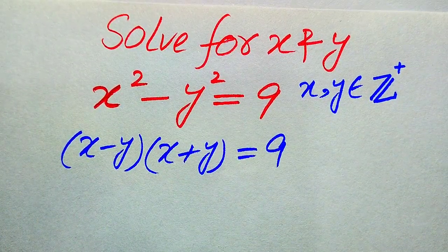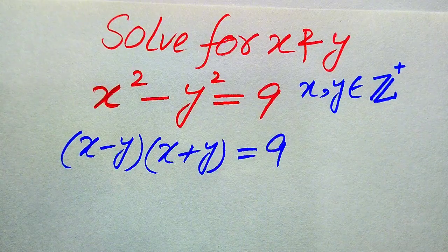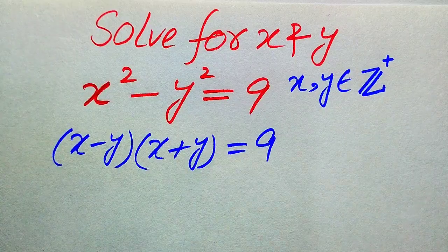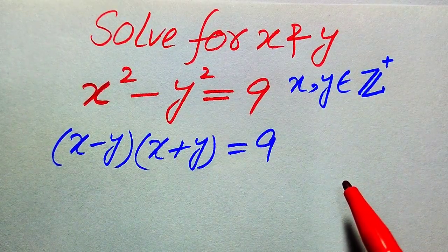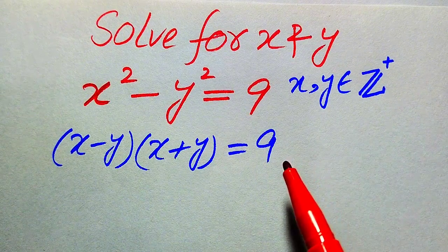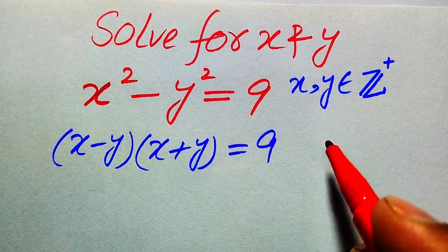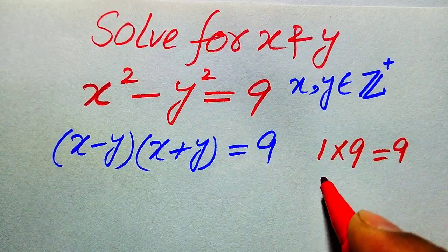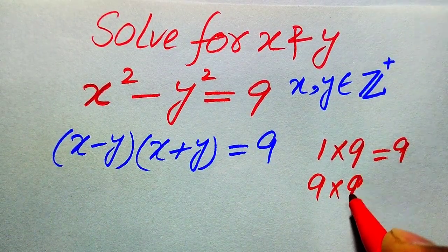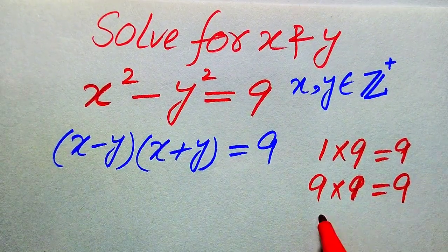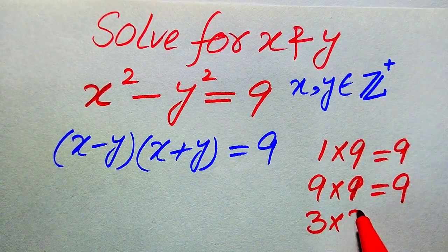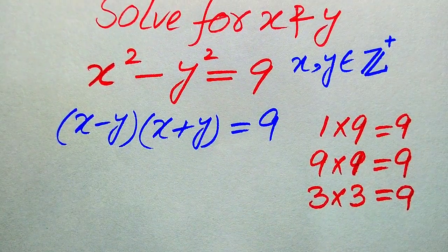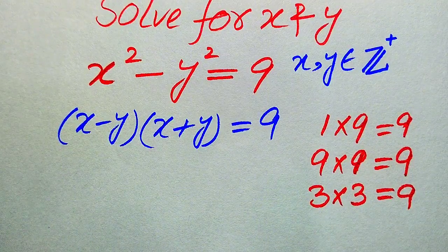On the left hand side we have two factors multiplied by each other, but on the right hand side we have only one factor. So we need to find the possibilities in which the product of two positive integers becomes 9. The possibilities are: 1 multiplied by 9 equals 9, 9 multiplied by 1 equals 9, and 3 multiplied by 3 equals 9.